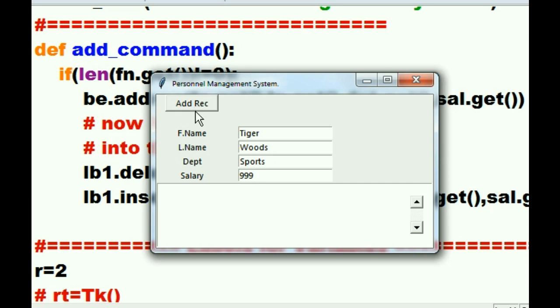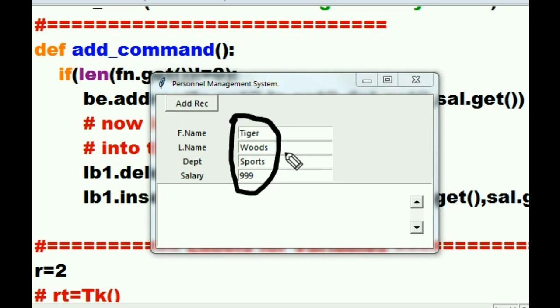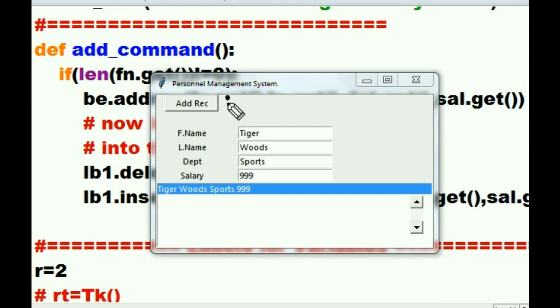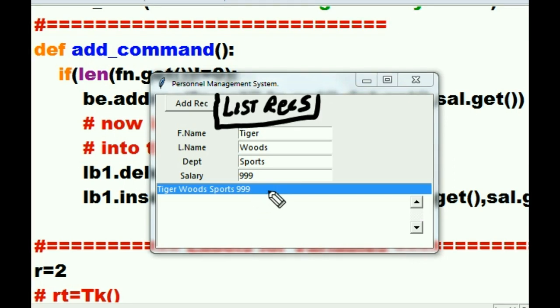All right, now when I click on add record, it's going to take all of this data here, turn it into a tuple, and place it into here. And it will display in the list box as a tuple.